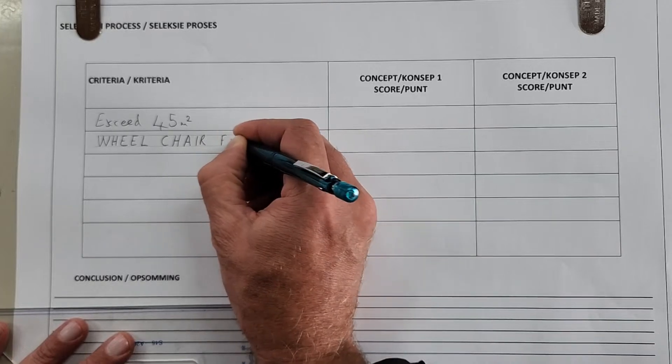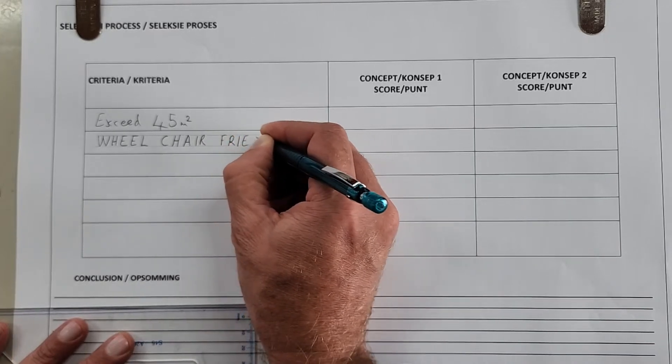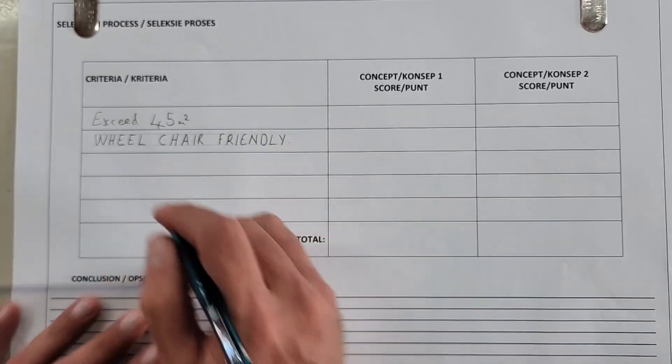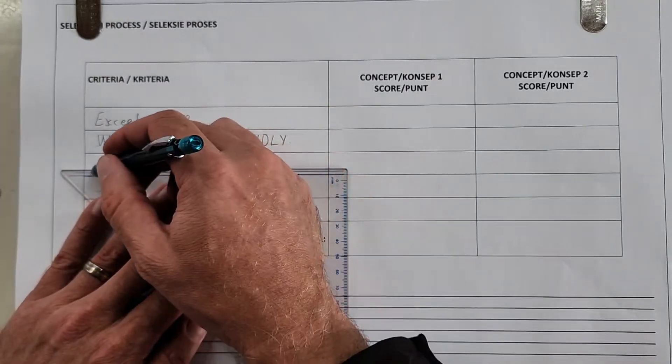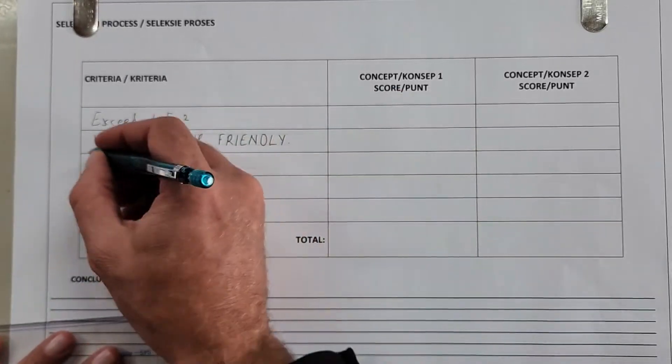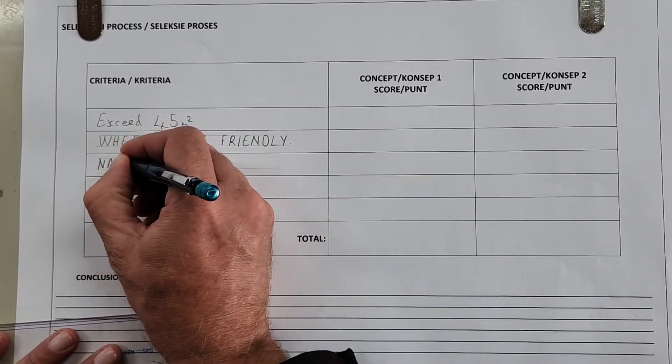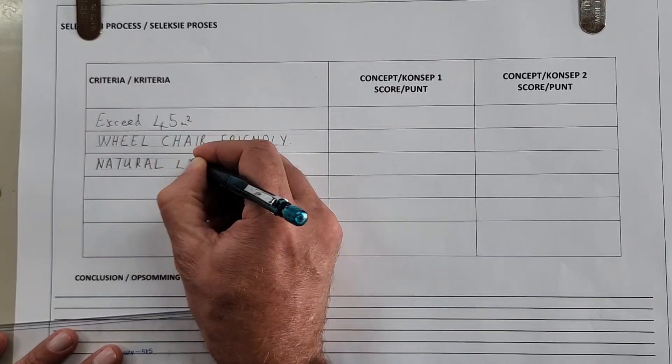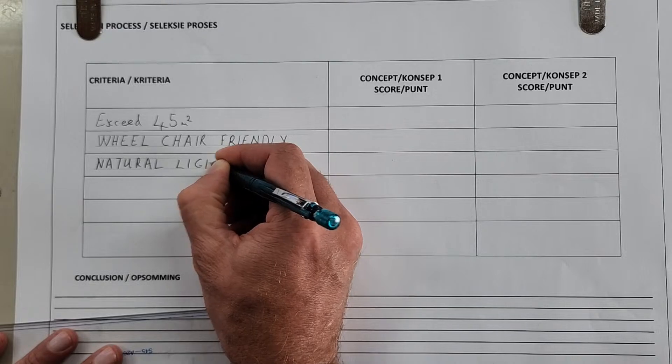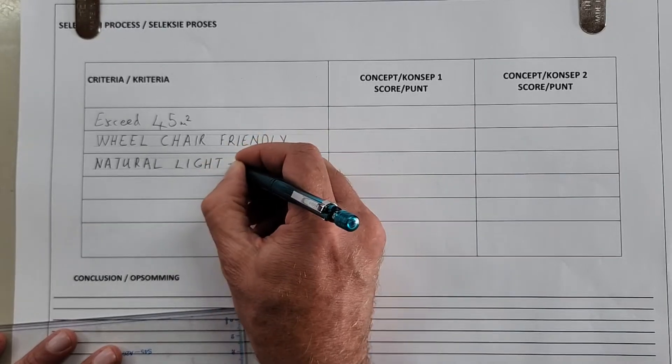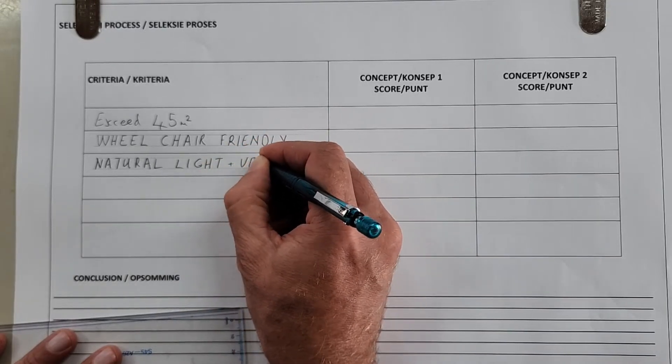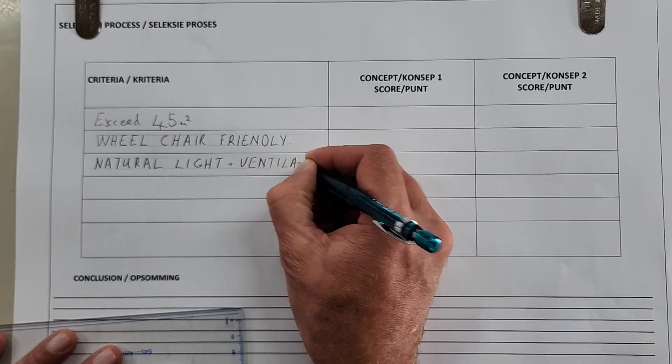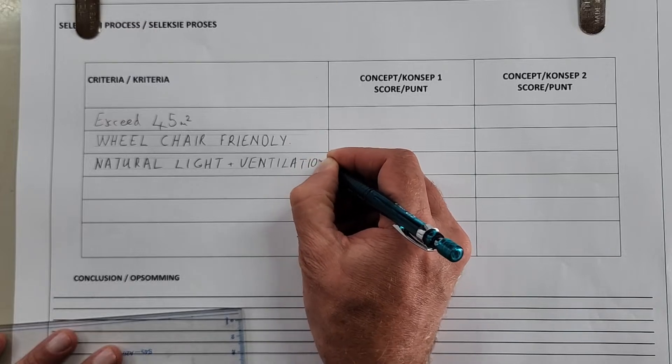You've all done your specifications and constraints. We know that one of the criteria is that this building cannot exceed 45 square meters. The other part of this is it needs to be wheelchair friendly. What would be another one that we could measure? Natural lighting was the next one.